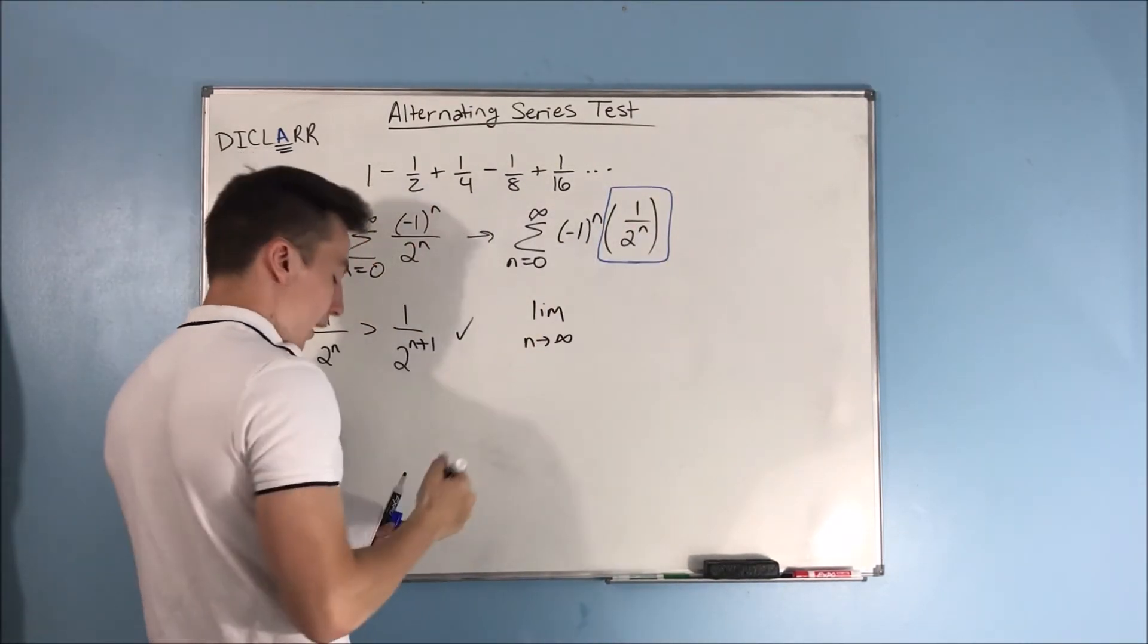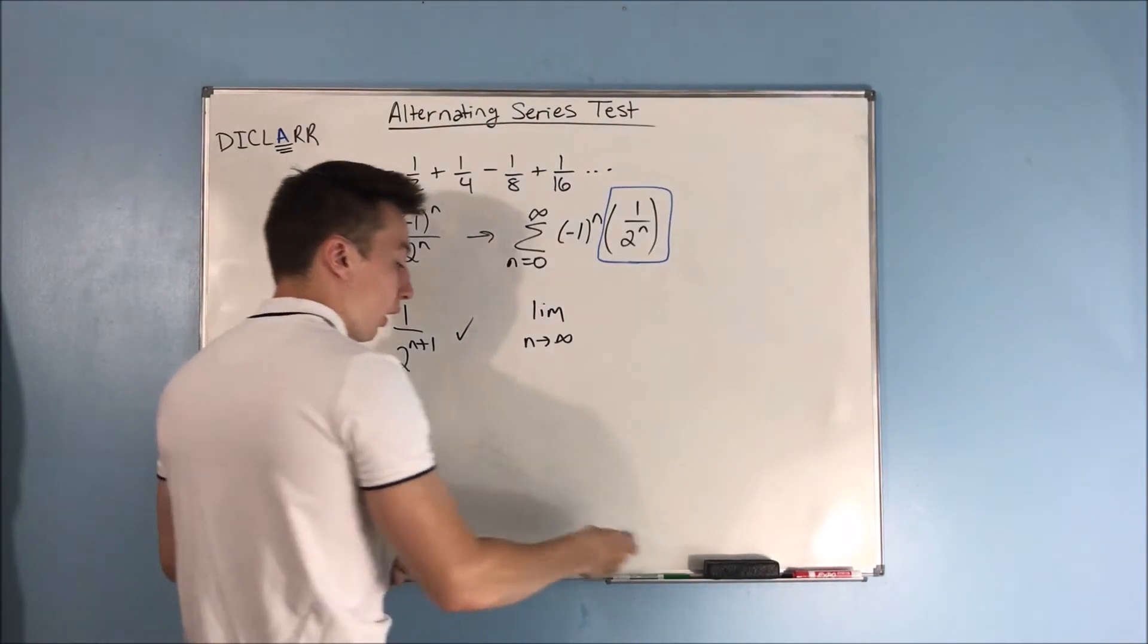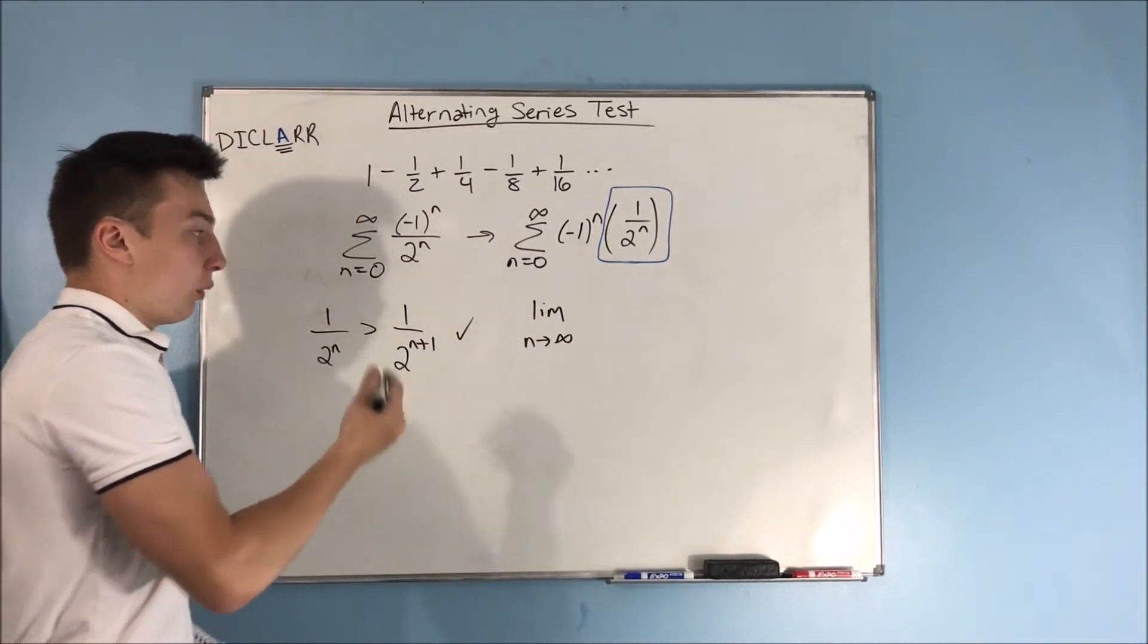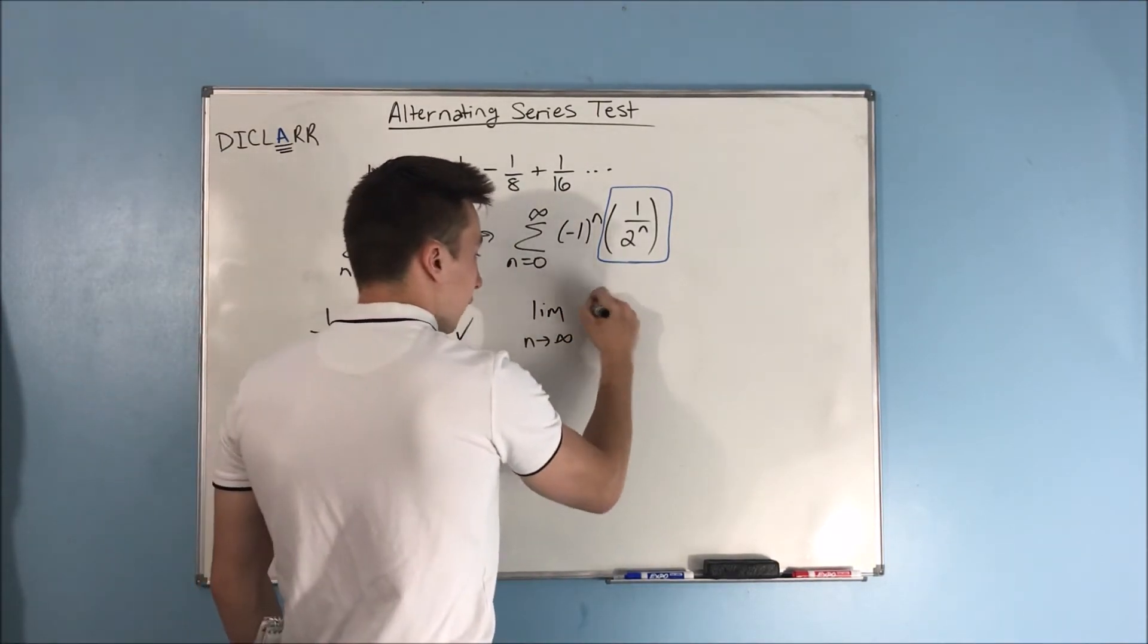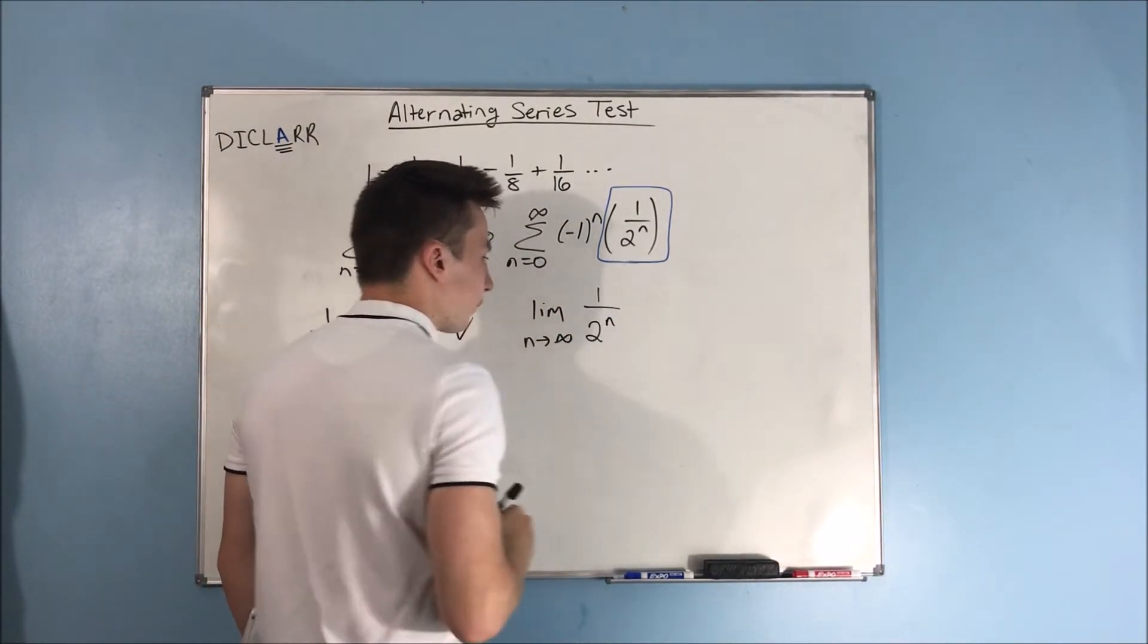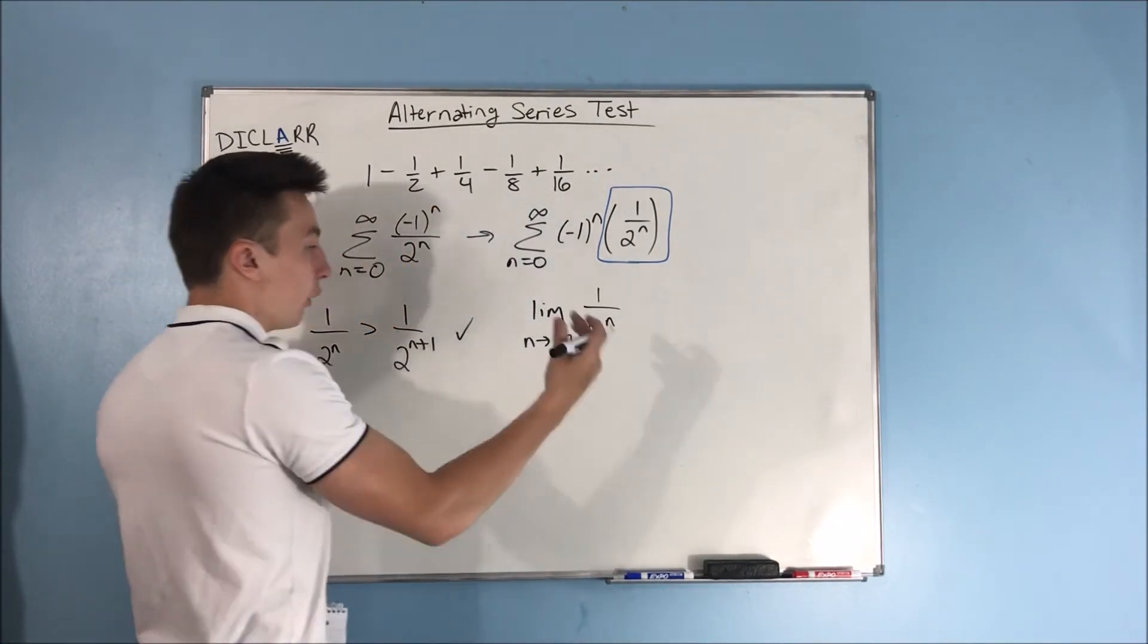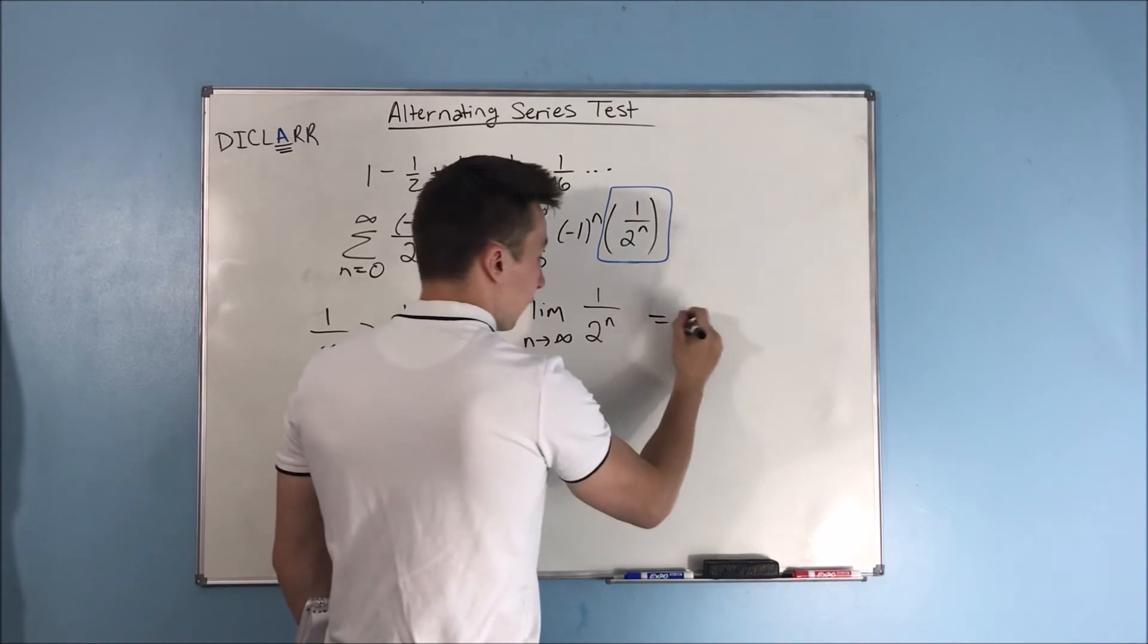Everything but that negative 1 to the n, or whatever is making the series alternating. So, we take the limit as n approaches infinity of 1 over 2 to the n, and you can see here that as n approaches infinity, you'll get an infinitely larger denominator, which means this is going to go to 0.